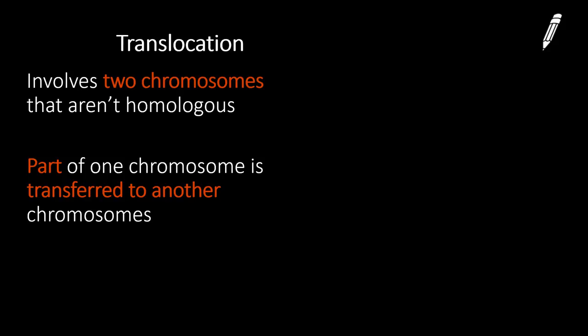The third type of chromosomal mutation that we're going to talk about is translocation. Translocation, it's a funky word, but it's involving two chromosomes that are not homologous. Remember we talked about homologous chromosomes before? Homologous chromosomes are two chromosomes that have the same type of information.